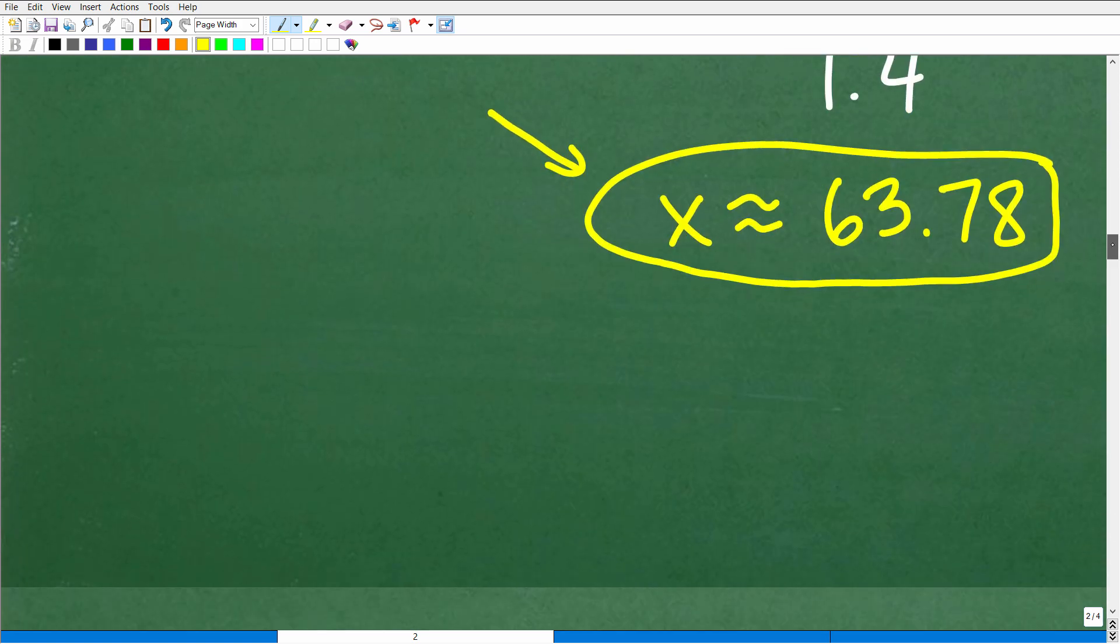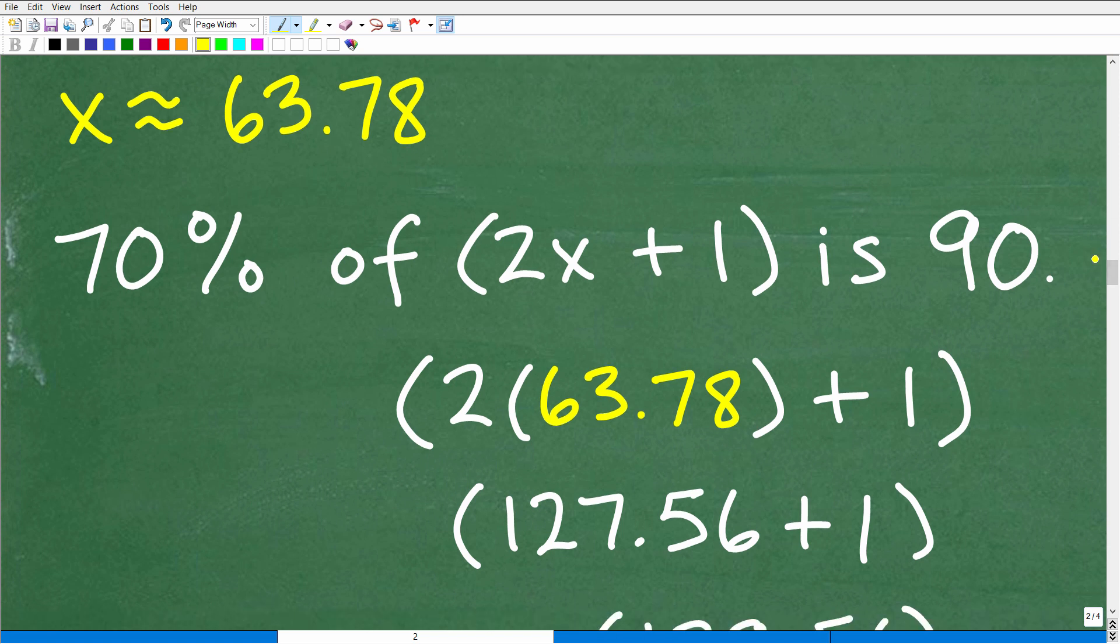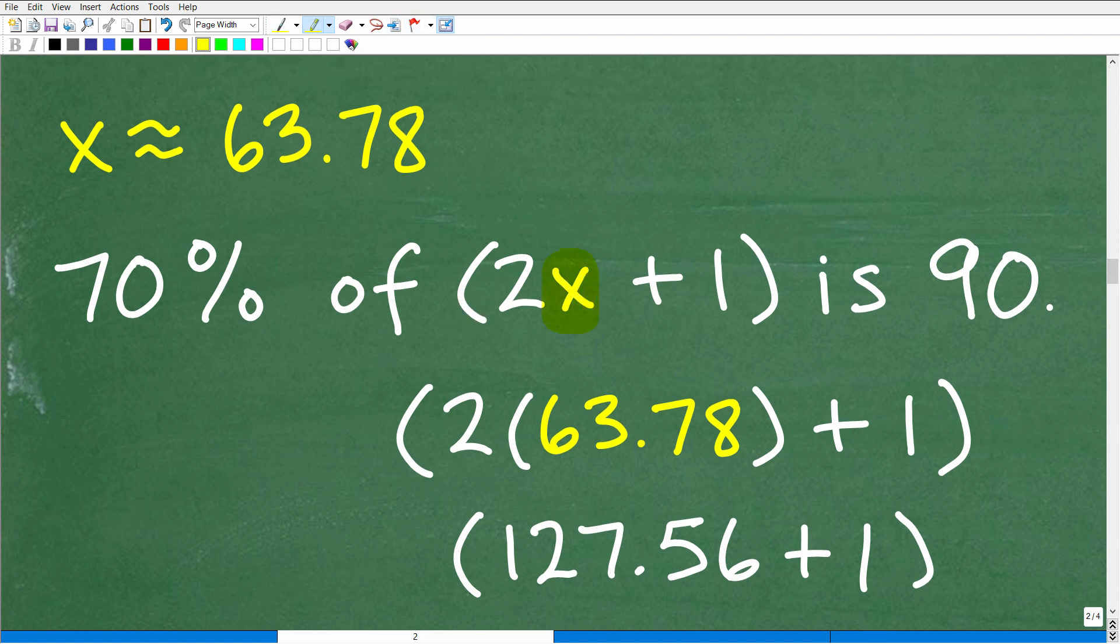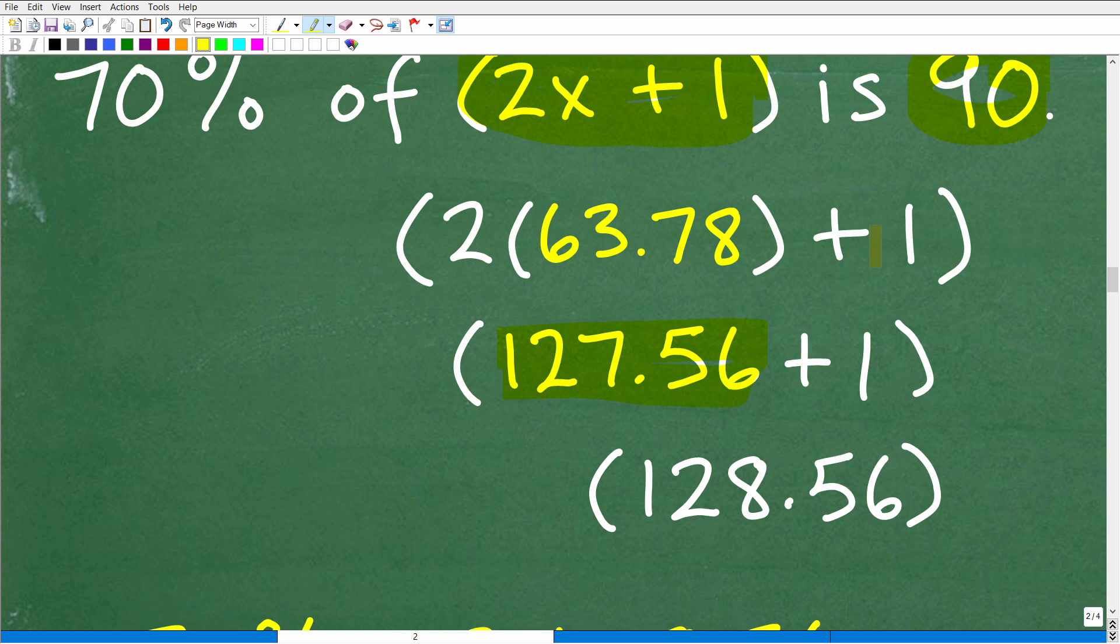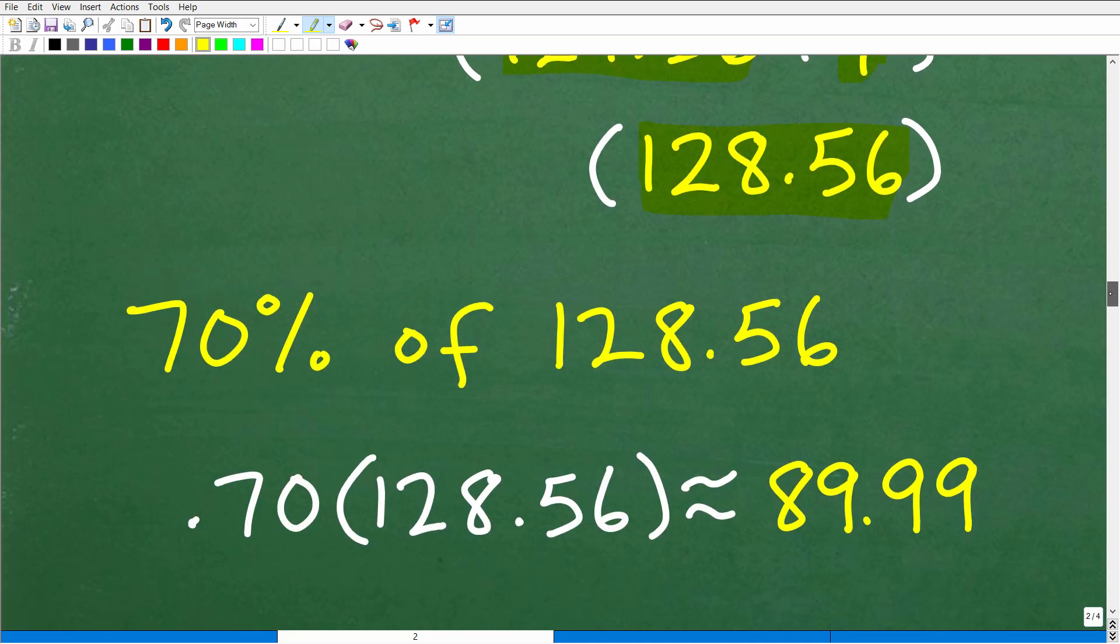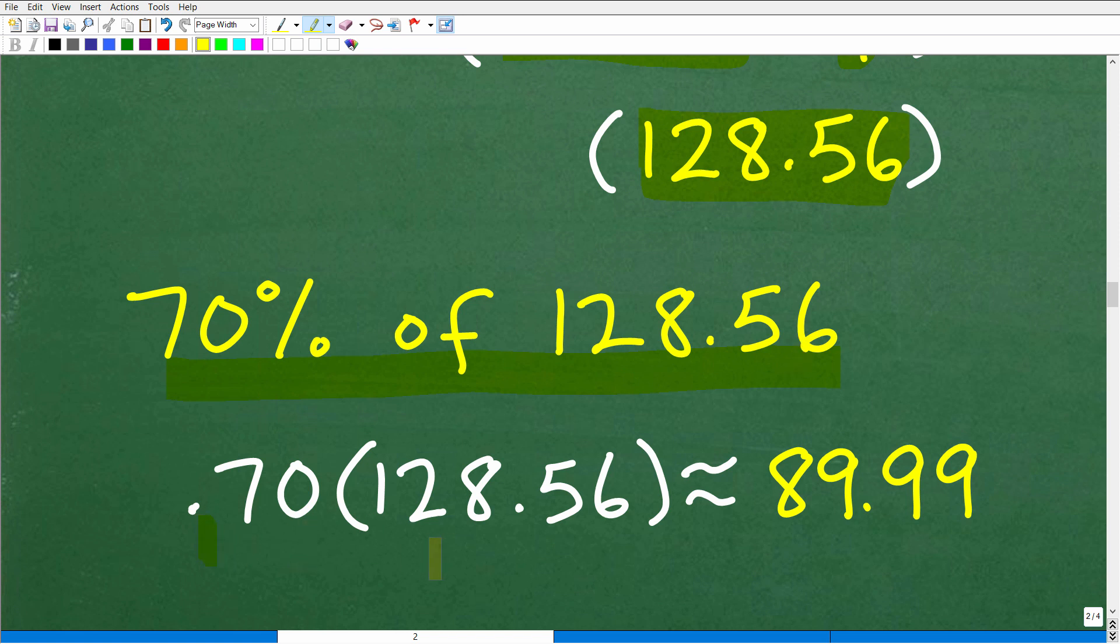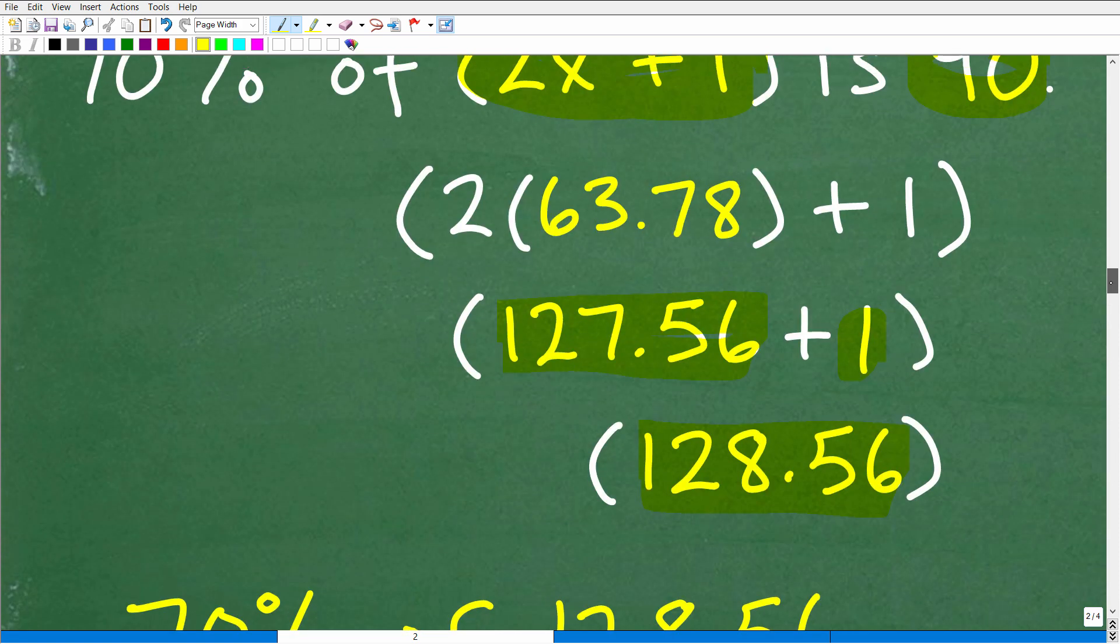So that is our answer. But let's just double check this, okay? Let's just say, you know what? I'm not sure this is right. How could we check this? Well, what we could do is go back to our original problem. And if we're saying that x is equal to 63.78, let's plug in that value right here and get this number. And then we'll take 70% of this number and see if that's pretty close to 90. So 2 times x, or in this case, it's 63.78, plus 1 is going to be this number. So you can see here, I did all the math. So 2 times 63.78 gives me 127.56 plus 1. So that number, that mystery number, is 128.56. So let's take 70% of 128.56. So that'll be 0.70 times 128.56. And guess what we get? We get approximately 89.99. And that is pretty close to 90, which is what the question was asking for right here.